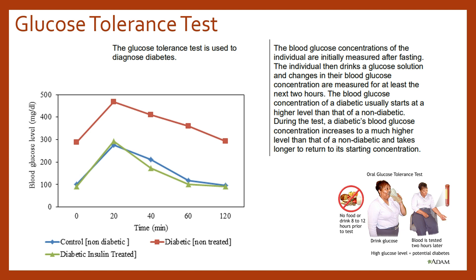The way the glucose tolerance test works is individuals are told to fast for a period of time. When they come in, they have their initial blood glucose levels measured after that fasting period to get that base level. Then they drink a known glucose solution, and we track the changes in blood glucose concentration for at least the next two hours or so.